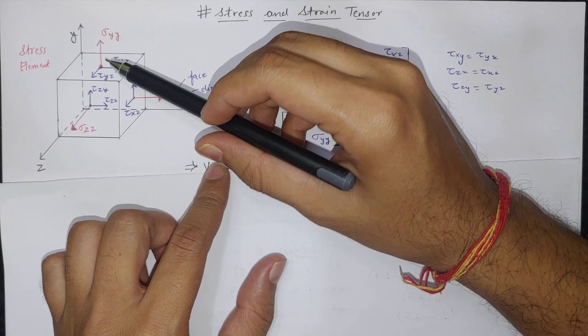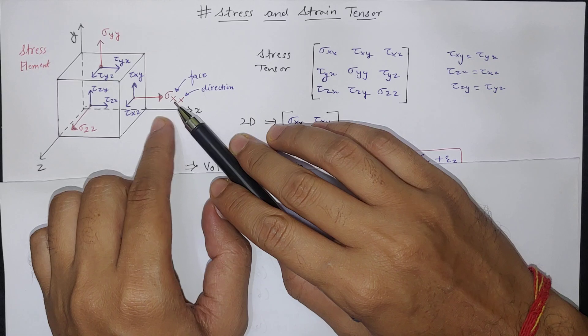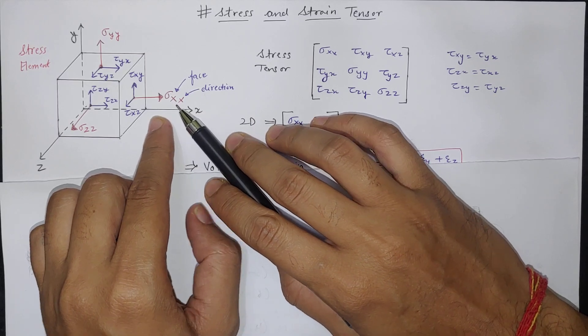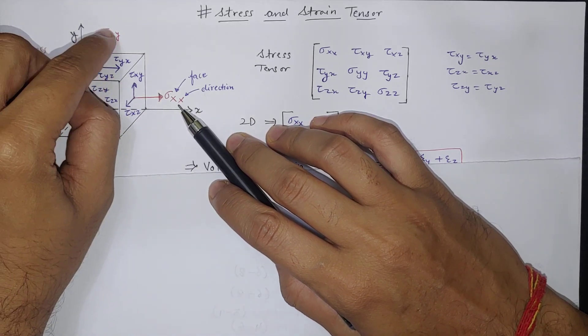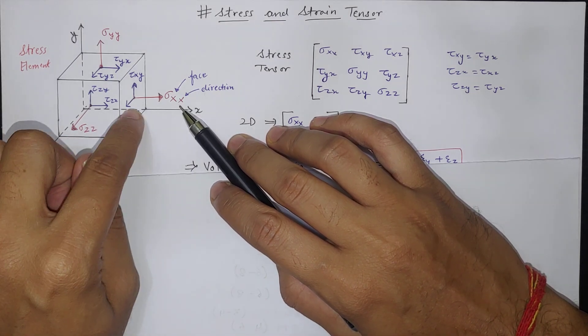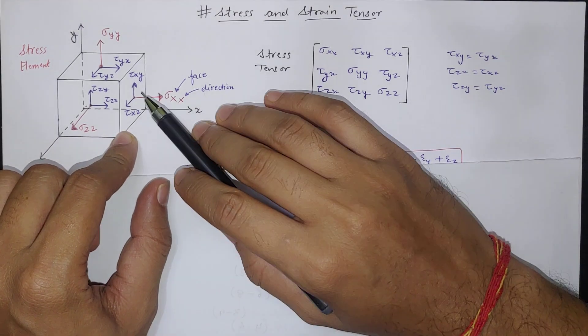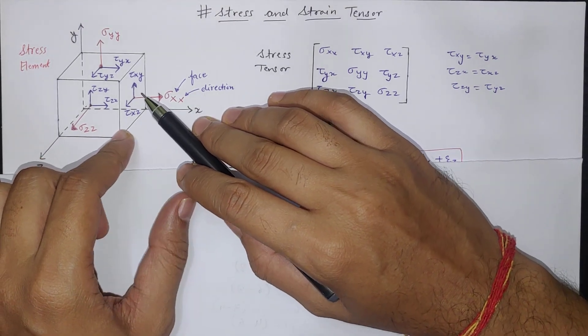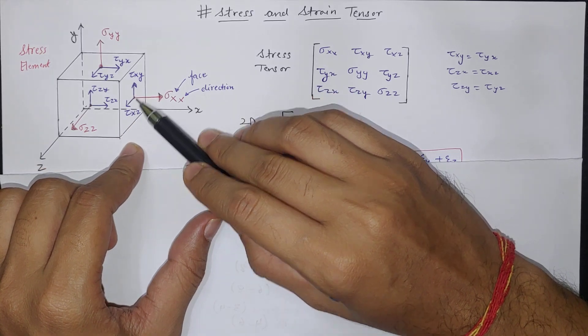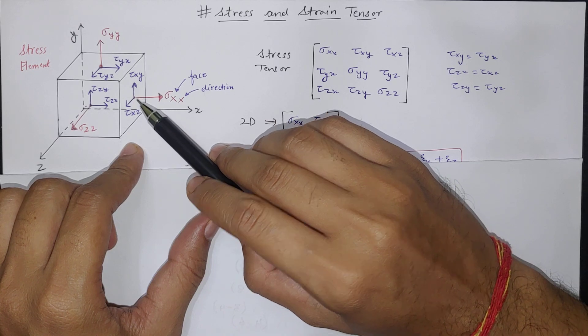So here if you see in X direction you have stress XX, in Y direction you have normal stress YY, and in Z direction normal stress ZZ which are perpendicular to the plane and there are six other forces which are generating shear stresses in six different directions.